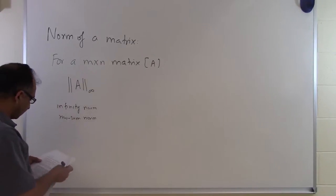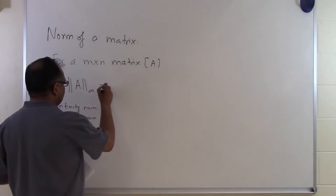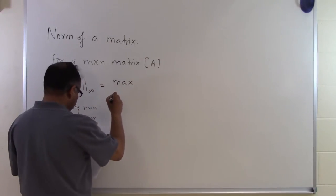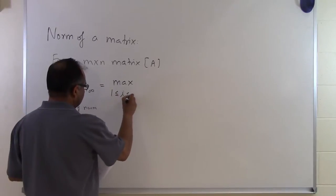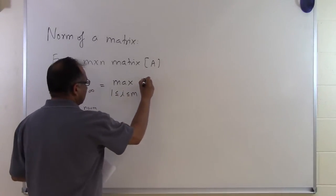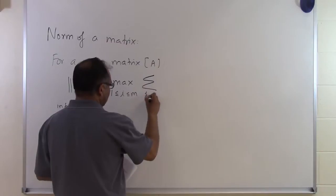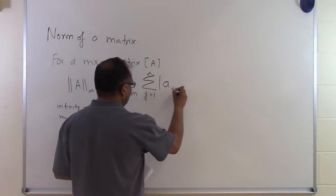So what is the definition of the infinity norm? It is as follows. It is max, 1 less than or equal to i less than or equal to m, summation j equals 1 to n, absolute value a_ij.